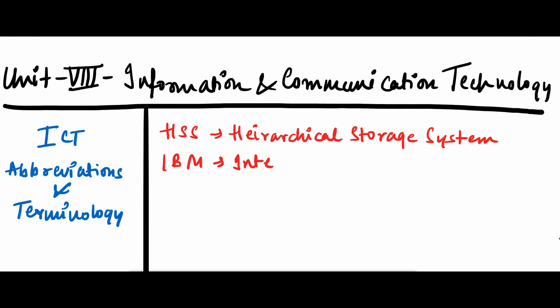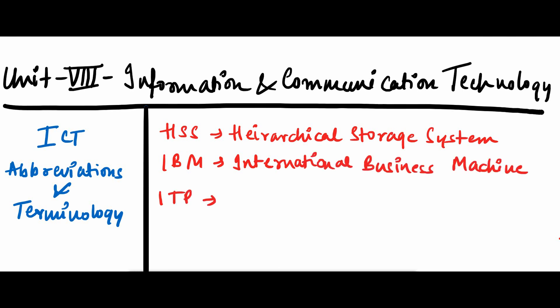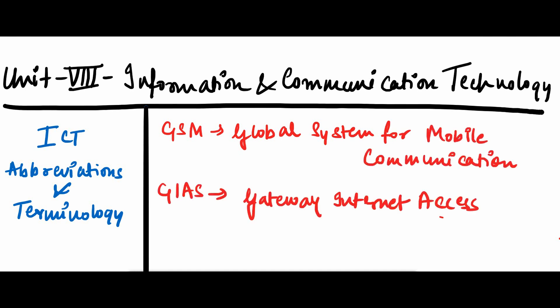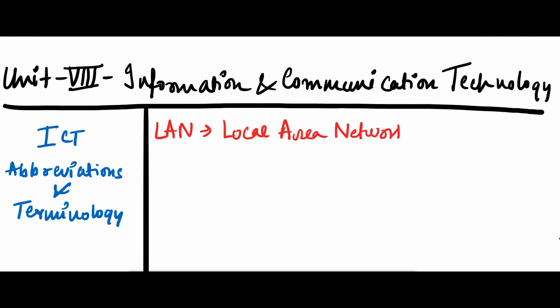Another one is IBM — International Business Machine. Next is ITV — Interactive Television. Next is GSM — Global System for Mobile Communication. Next is GIS — Gateway Internet Access System. Next is LAN — Local Area Network. Next is LED — Light Emitting Diode.